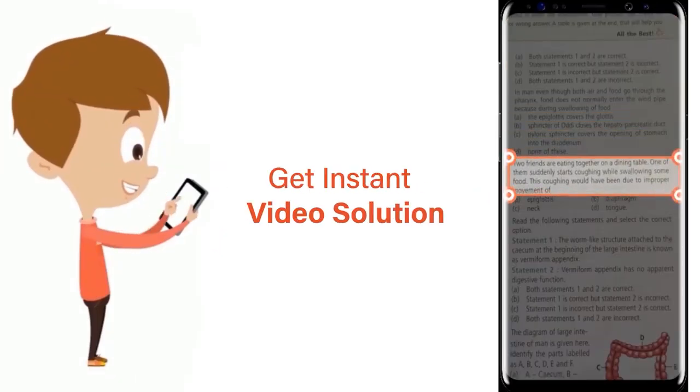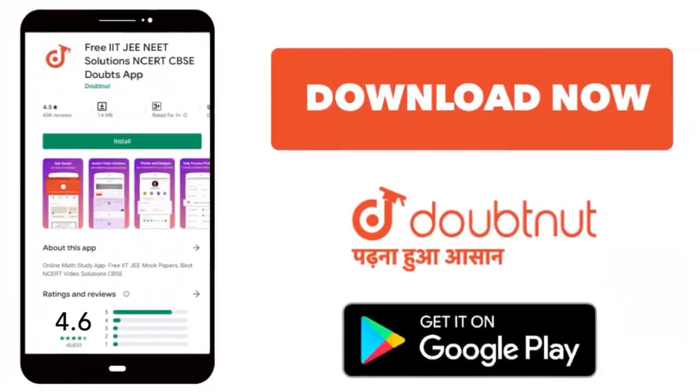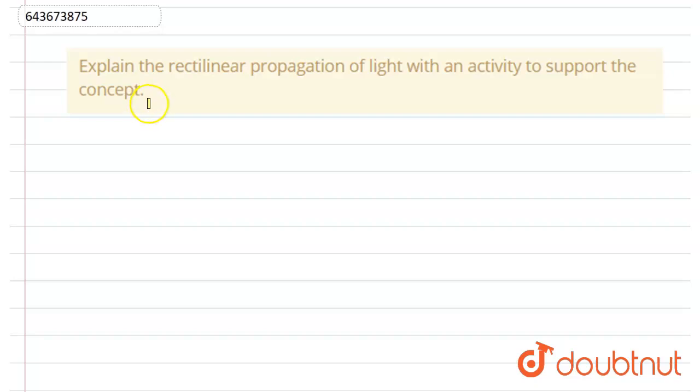the question, crop the question, and get instant video solution. Download Doubtnut app today. Hello everyone, the question is: explain the rectilinear propagation of light with an activity to support the concept. So first of all, let us understand what